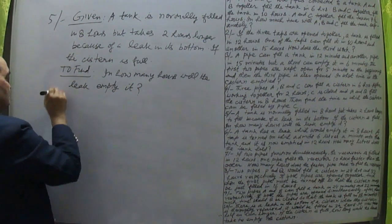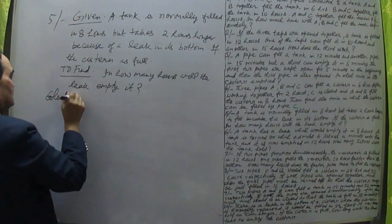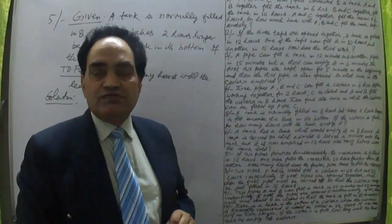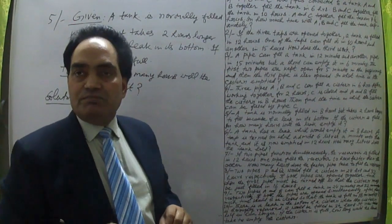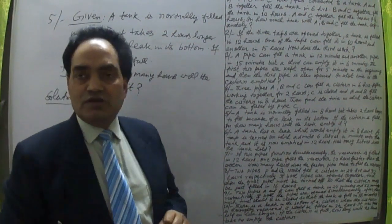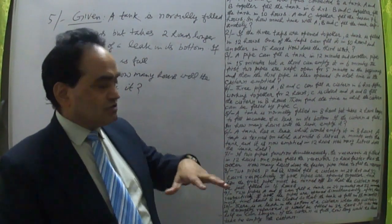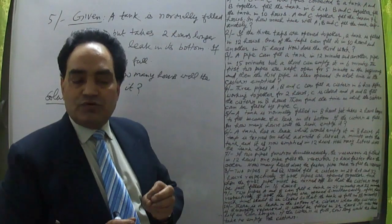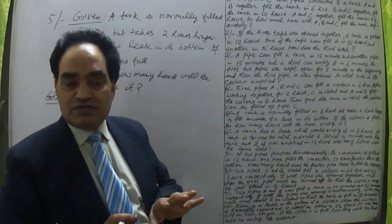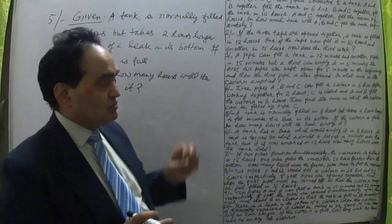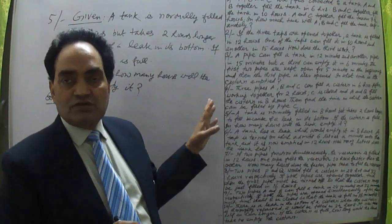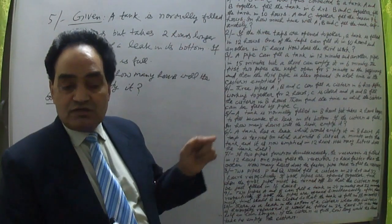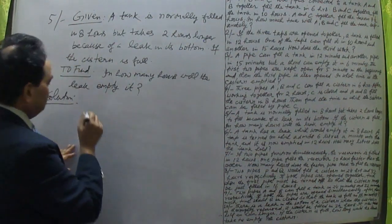Whenever one pipe is filling and another is emptying (a leak), we find the leak's time by multiplying the two times and dividing by the difference: 8 into 10 divided by 10 minus 8.